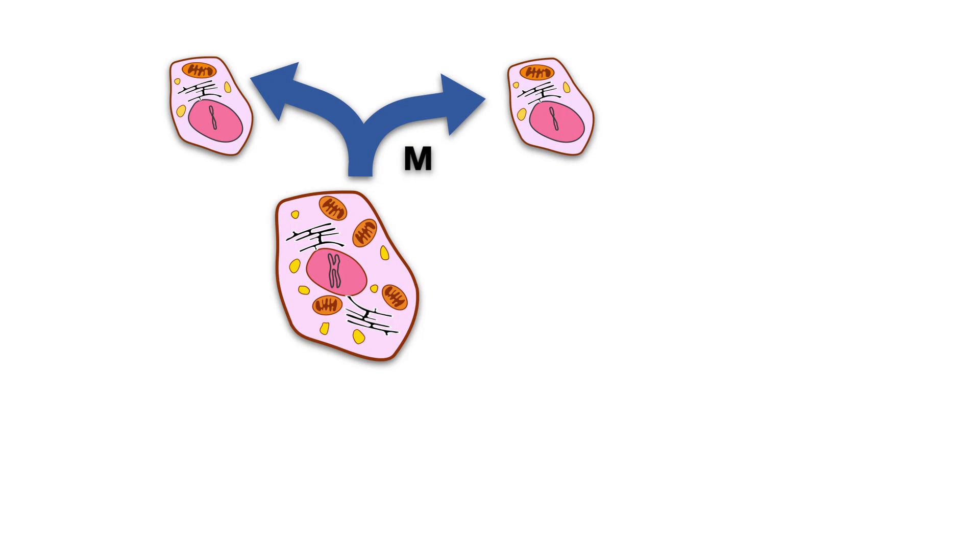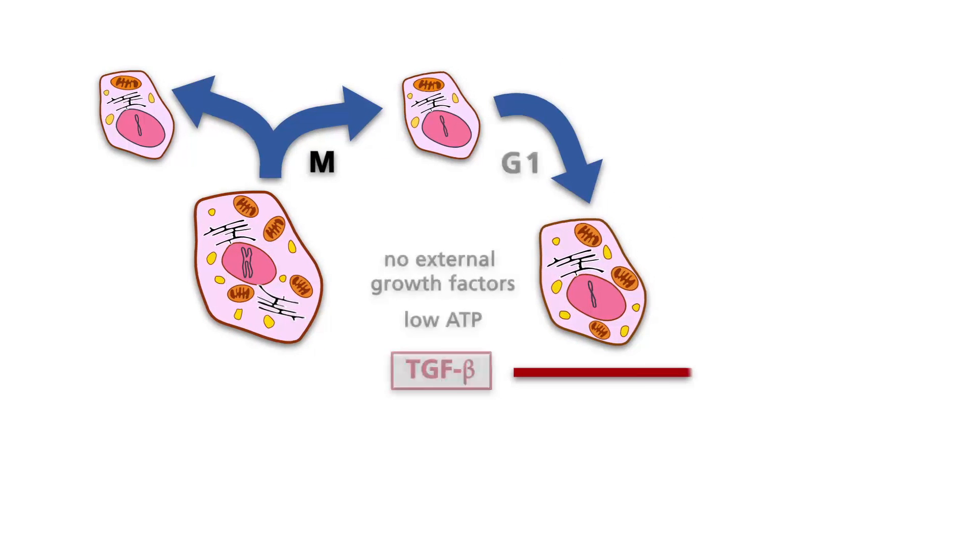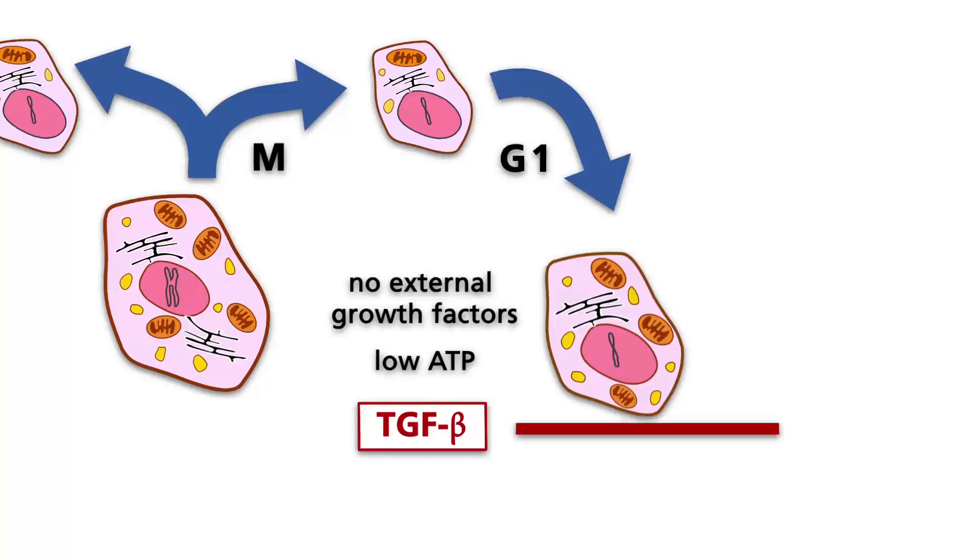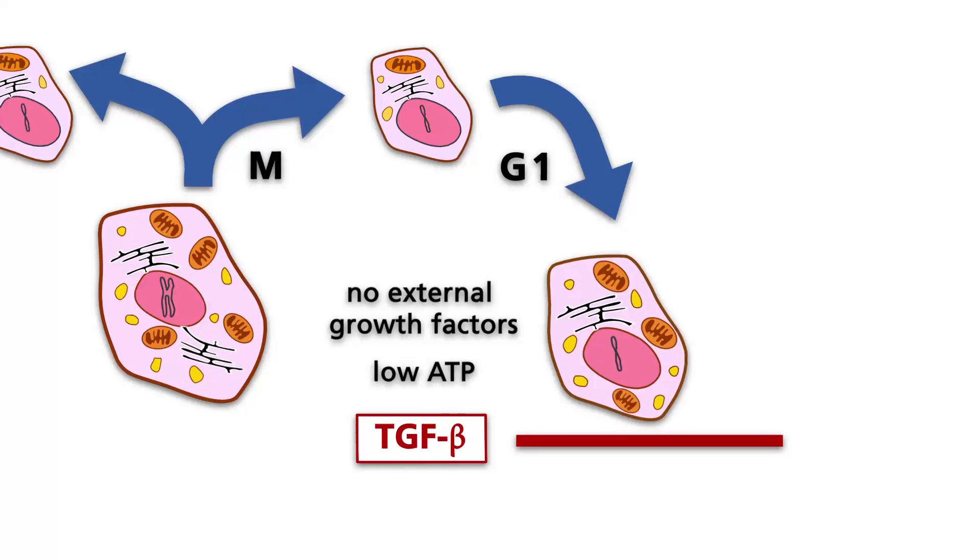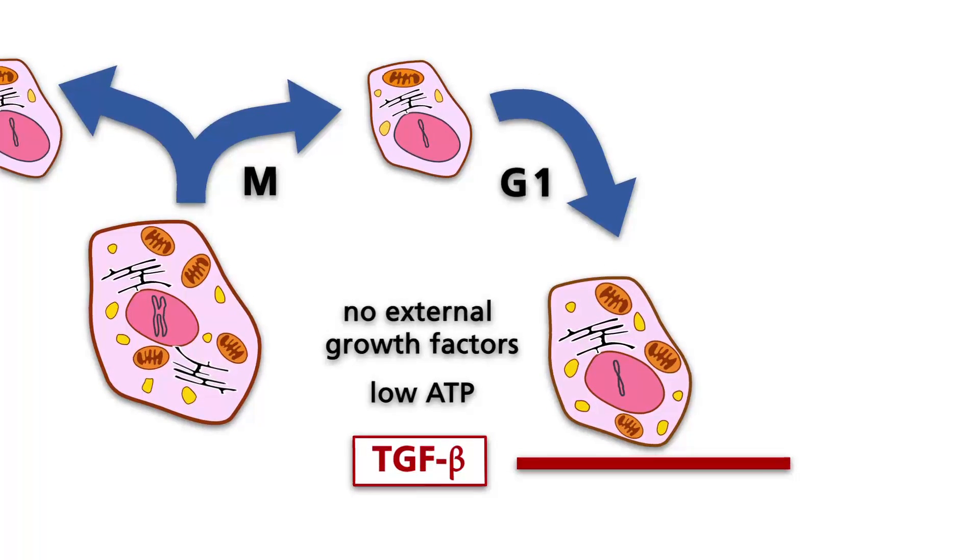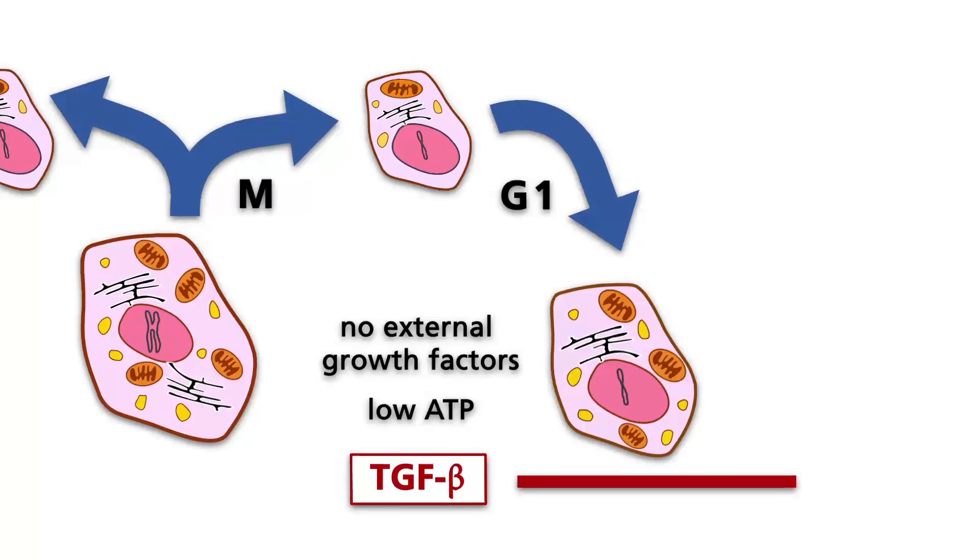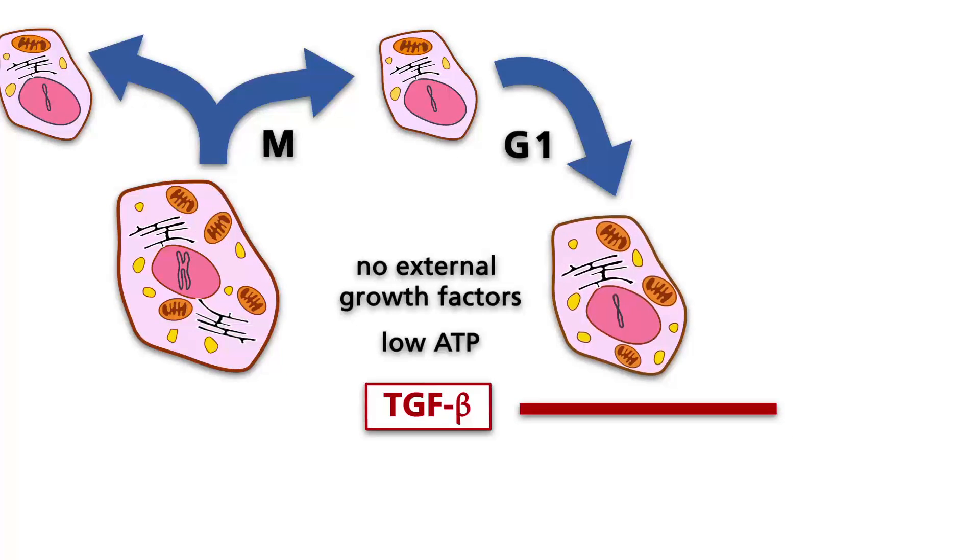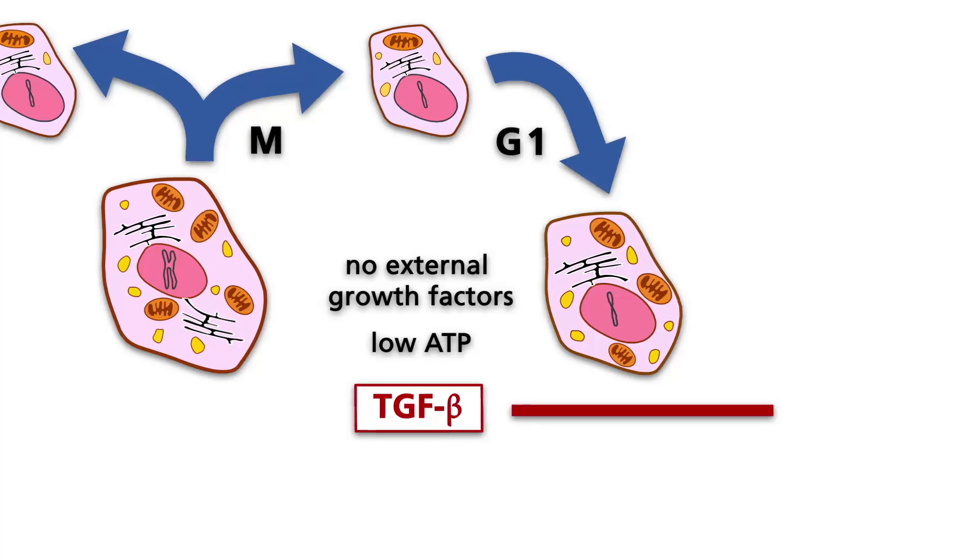Thus, an internal ATP level that is too low for the upcoming DNA synthesis, or the absence of external cell cycle stimulating growth factors, can lead to a cell cycle arrest at the R-point. Additionally, proliferation inhibiting factors, such as TGF-beta, can block the pathways necessary for stimulating DNA synthesis.